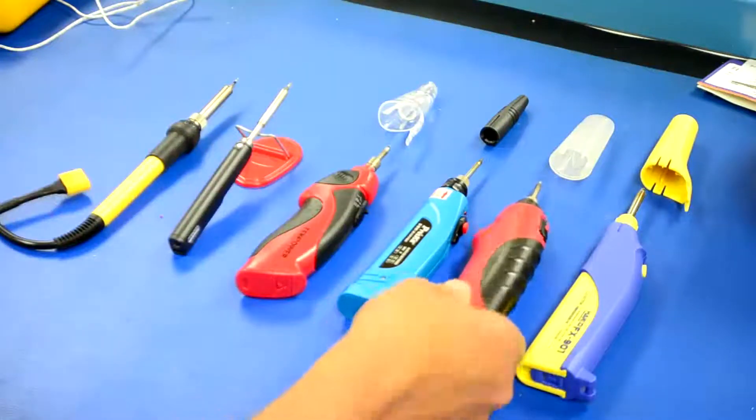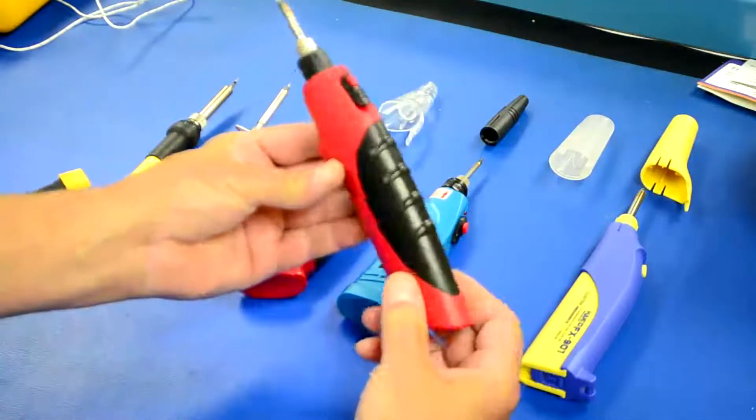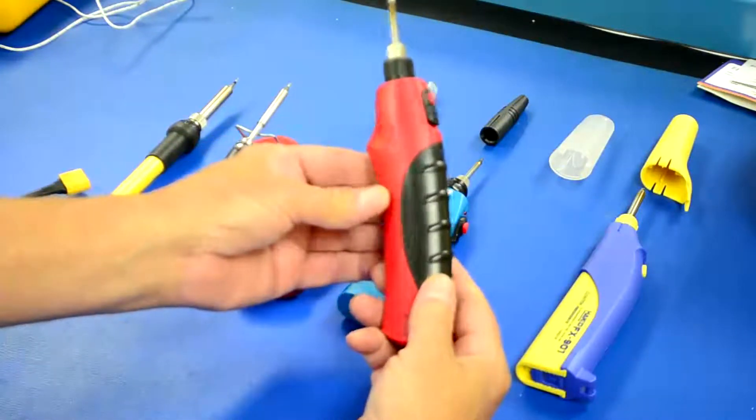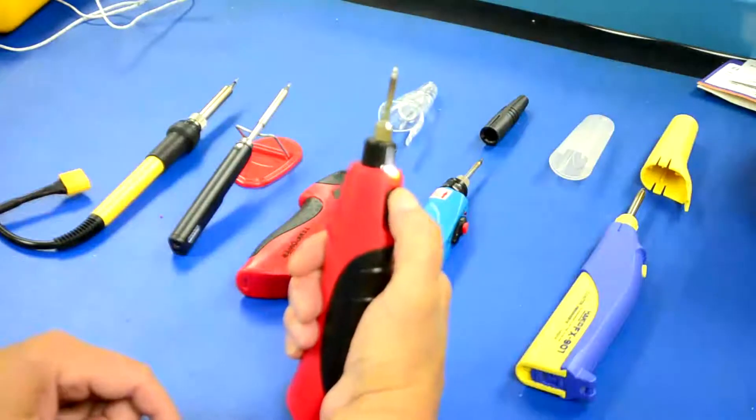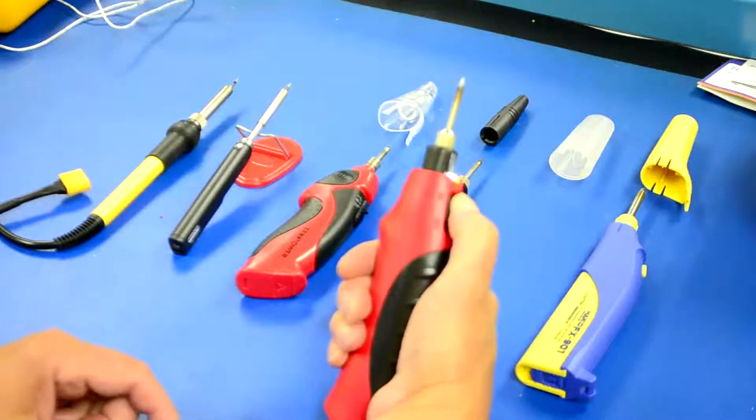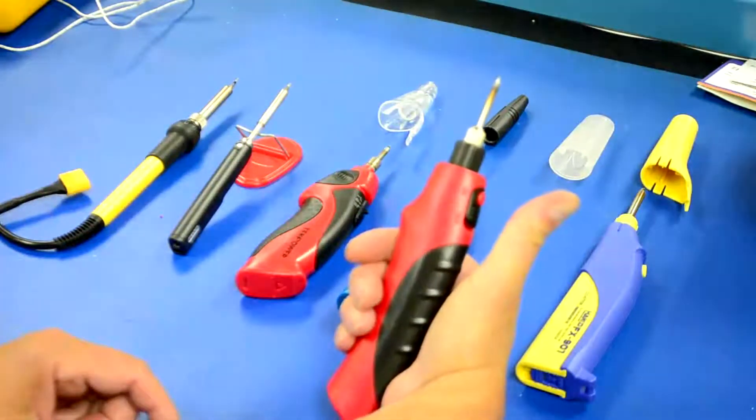Now two of these have push buttons for on and off. You switch it on. This is the Tool Luxe. You push the button for heat. As long as you're holding the button down, you'll get your heat. As soon as you release the button, the heat is off.